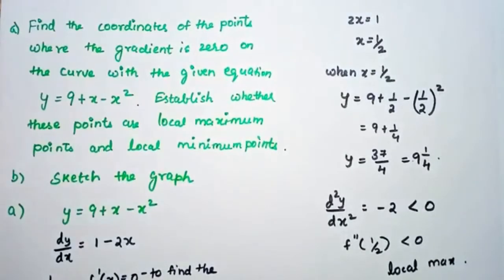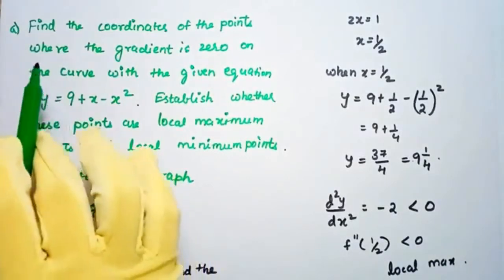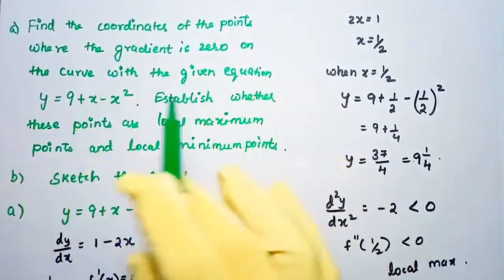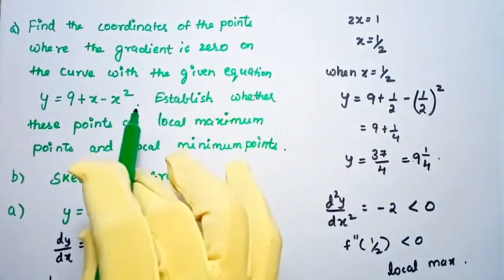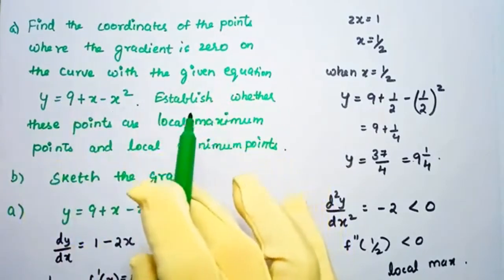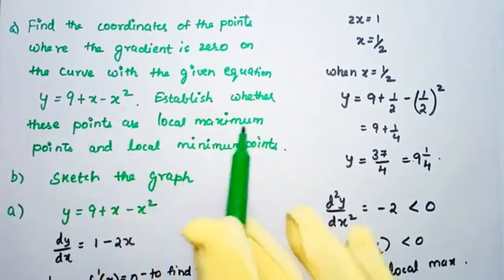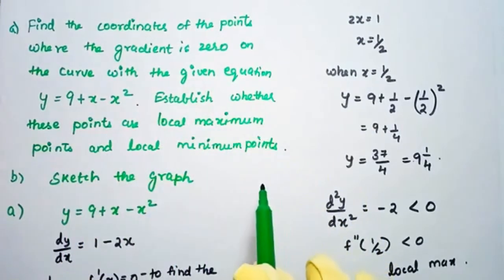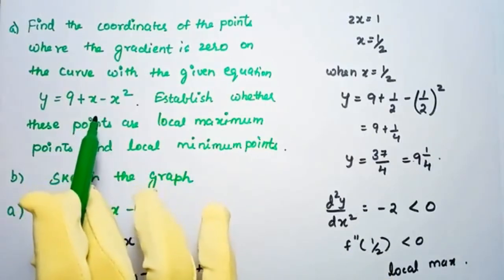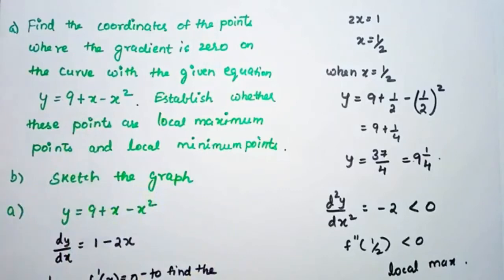Now we solve a similar problem. Find the coordinates of the points where the gradient is 0 on the curve y = 9 + x − x². Here a negative term is used before x². Establish whether these points are local maximum or local minimum, and sketch the graph.